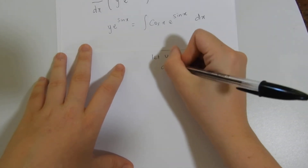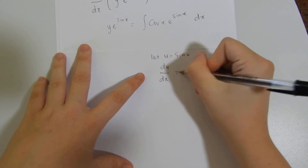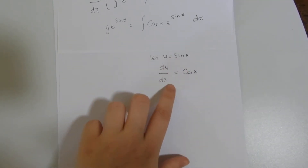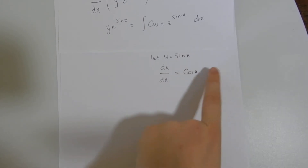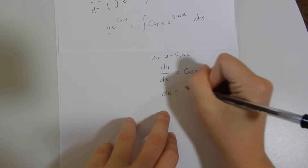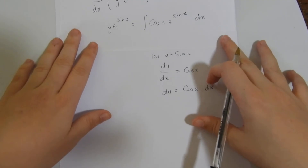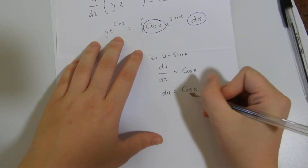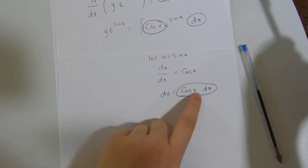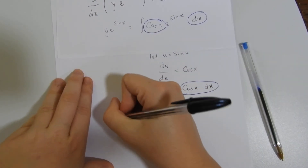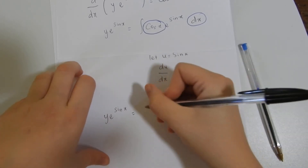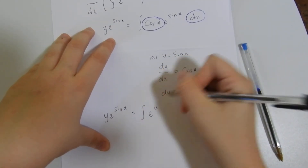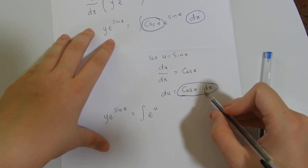We're going to let u = sin(x). Differentiating this: du/dx = cos(x), so du = cos(x) dx. We can see that we have cos(x) dx in the integral. So we can replace cos(x) dx with du, and replace sin(x) with u. So we've got y·e^(sin x) equals the integral of e^u du.